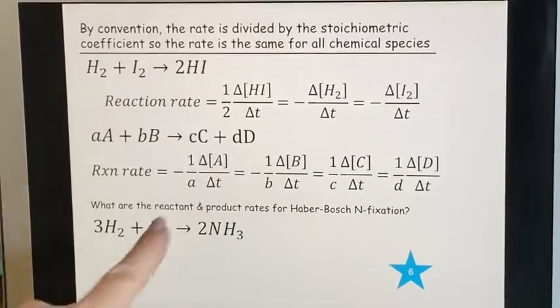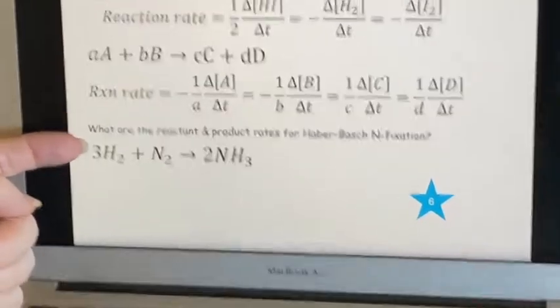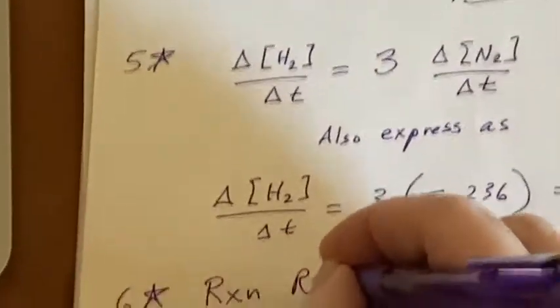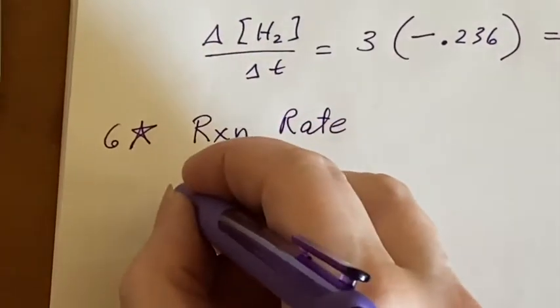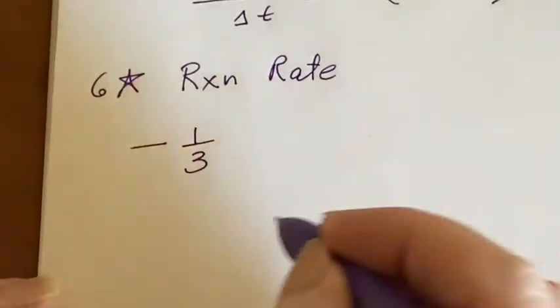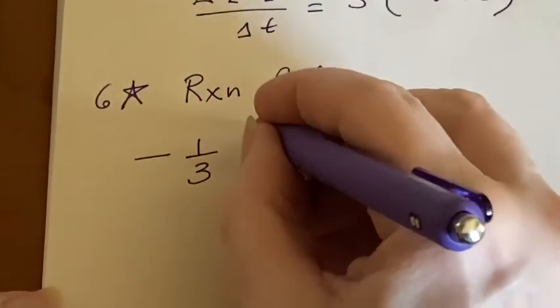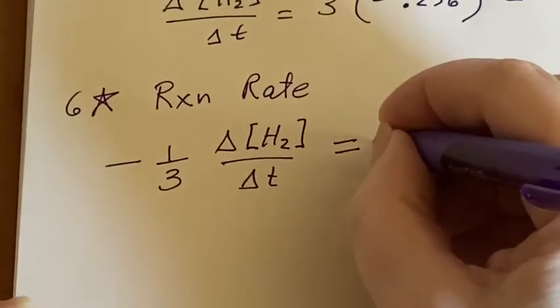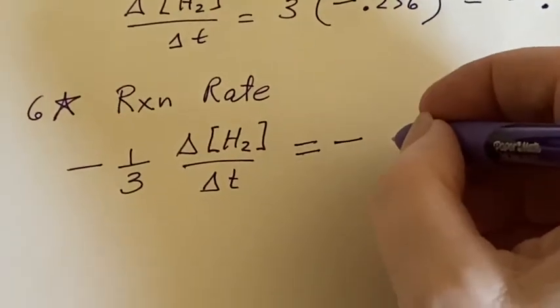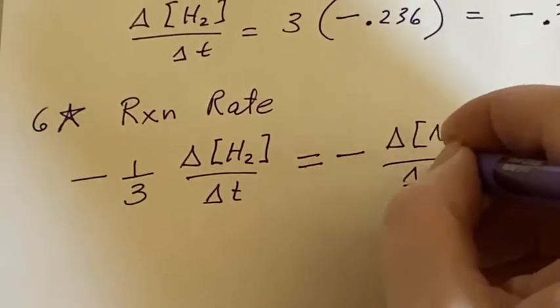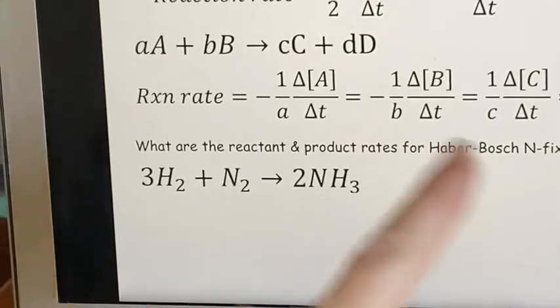They're asking what are the reactant and product rates for the Haber-Bosch process. This is just practice, really. I would look at it and say, the reaction rate has three different things. The first one is a reactant, so it's going to have to have a negative sign. It has a coefficient, so we'll put the coefficient in the denominator: the change in concentration of hydrogen over time. That has to be the same as another reactant, so it's a negative sign. The coefficient is a one, so I won't have to do anything - I'll just write the change in nitrogen concentration over time. And then lastly, I finally have one that is a product, so it's positive, but the two has to be in the denominator.